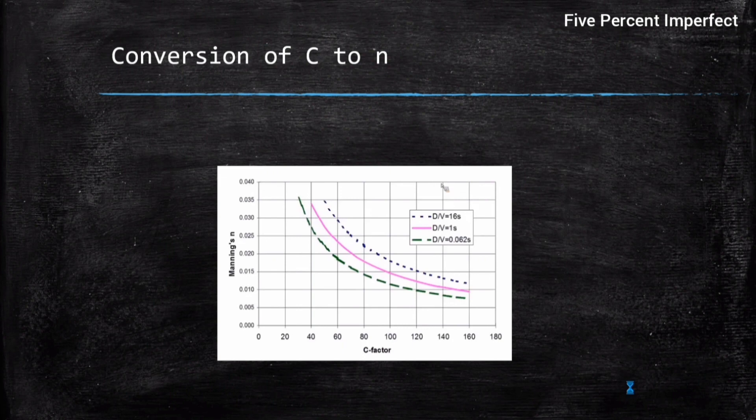Conversion between C and n is possible using graphs, but it depends on the size of the pipe and the velocity — or more precisely the ratio of size to velocity.